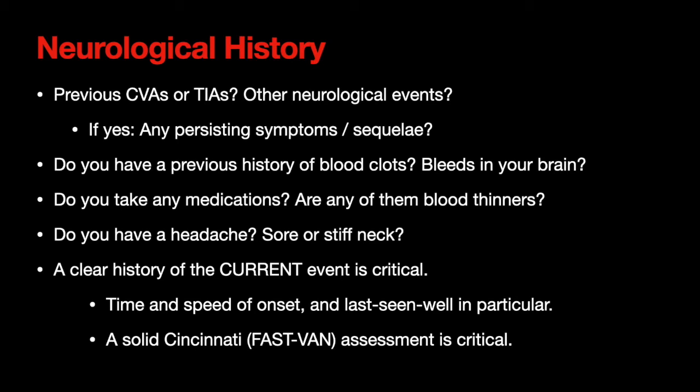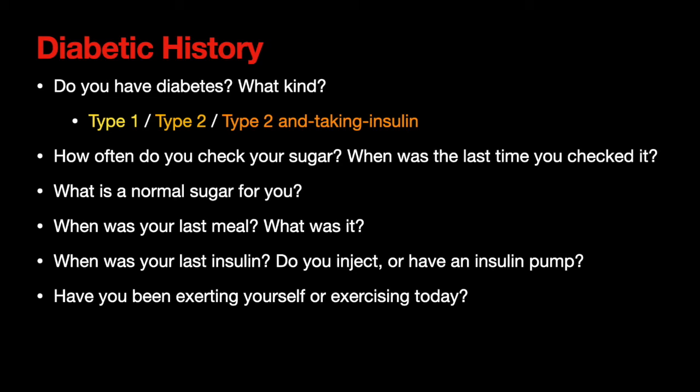Diabetic history: you've got someone with an altered level of consciousness, or maybe they have a diabetic medical alert bracelet. Important questions to ask: Do you have diabetes? If yes, what kind — type one, type two, or type two on insulin? Some type two diabetics with consistently high sugars do take insulin. How often do you check your sugar, and when was the last time you checked it?